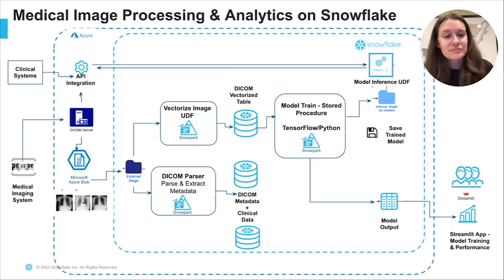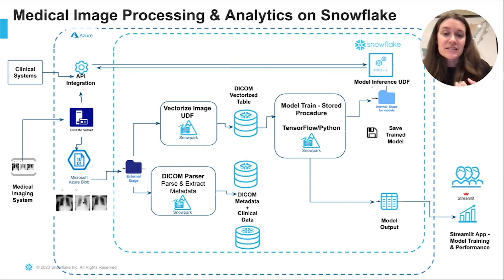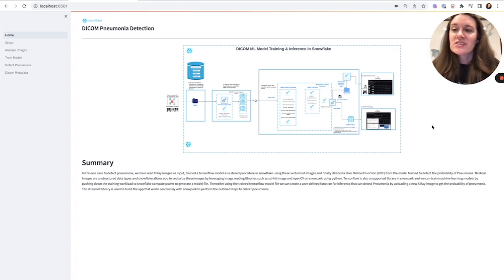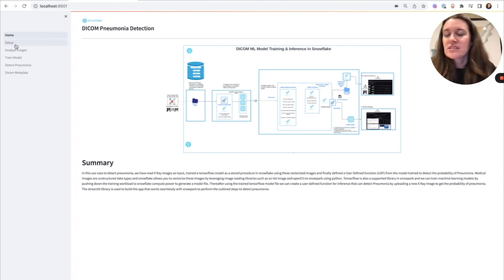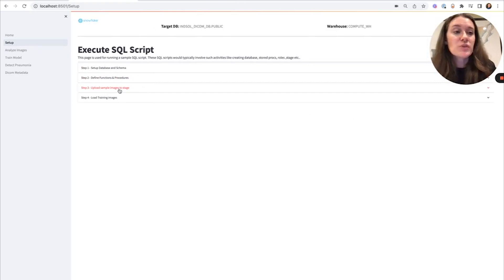The last piece is our Streamlit UI — an application built on top of the solution. This lets you extract metadata, train the model, vectorize images, and run inference on new images. I'll demo all of that today. This solution accelerator has a series of setup steps that create those stored functions and procedures, upload some sample data, and load in the training dataset.